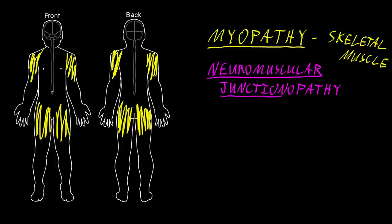Myopathy, where skeletal muscle cells are having dysfunction diffusely, can be caused by lots of different types of pathology including genetic, idiopathic, autoimmune, metabolic, nutritional, and toxic disorders. An example of a genetic myopathy is called Duchenne muscular dystrophy.